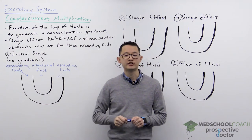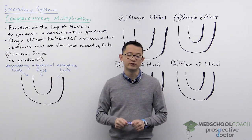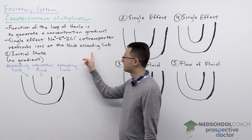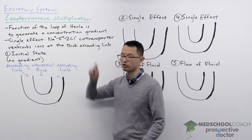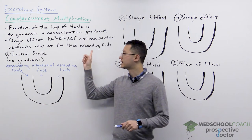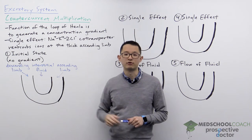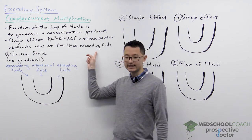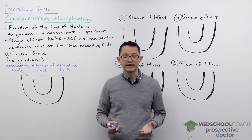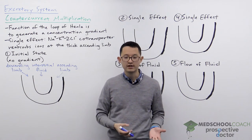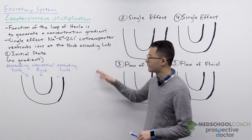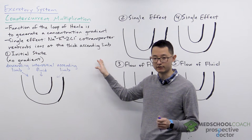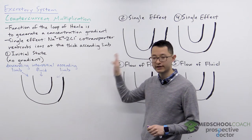The loop of Henle generates the concentration gradient in the kidneys through two processes: the single effect and the flow of fluid. The single effect refers to the sodium-potassium-2-chloride co-transporter in the thick ascending limb. This co-transporter removes all three ions from the thick ascending limb of the loop of Henle, essentially removing solutes from the renal tubule. To illustrate how these two processes can generate the concentration gradient, we're going to look at a number of diagrams.